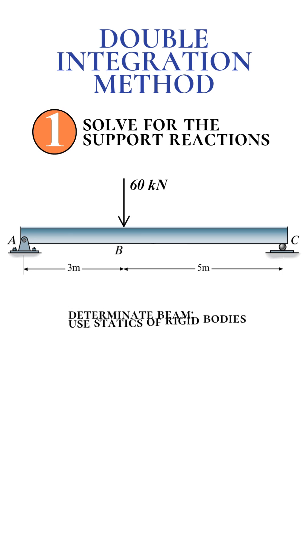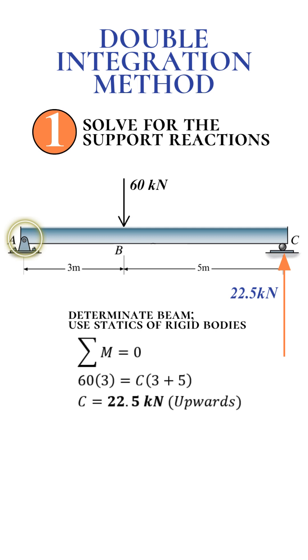We'll begin with static equilibrium. By taking the moment about point A, we can determine the reaction at point C. Then, by applying the summation of vertical forces, we can solve for the reaction at point A.